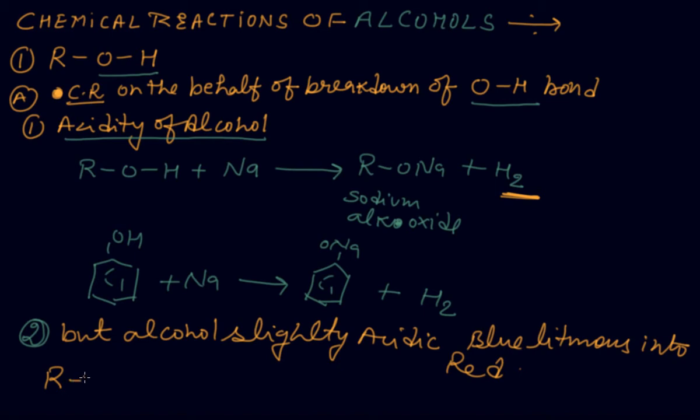This is on the behalf of plus I effect, plus I effect of the R group. Primary and secondary alcohol are more acidic than tertiary alcohol because whenever oxygen required electron, this electron demand is completed by the number of alkyl groups present on the carbon which is attached with the hydroxy group.